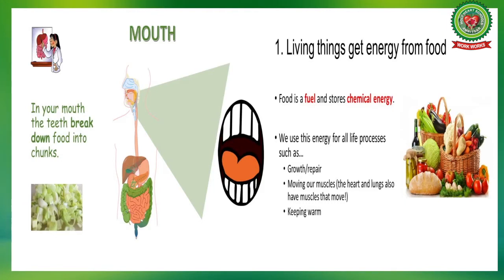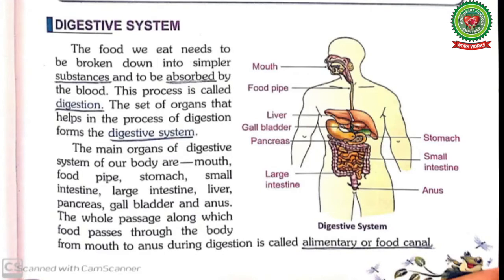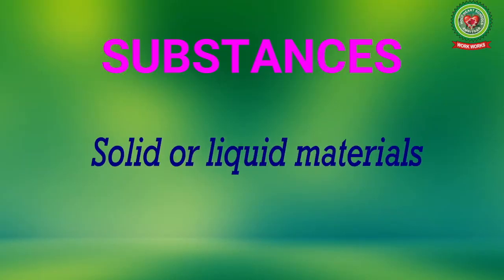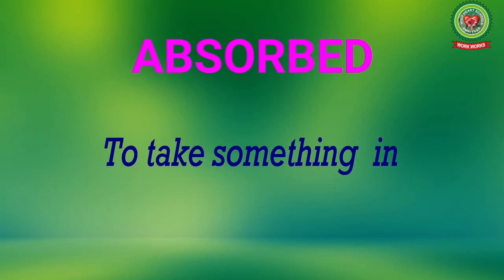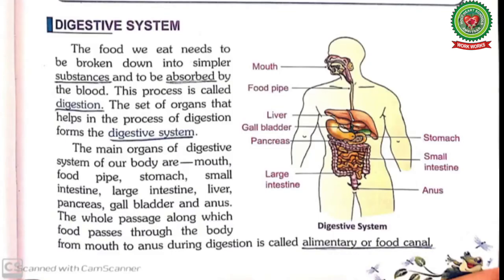Please open your book at page number 29 and let's start with the reading. Today our topic is the digestive system. The food we eat needs to be broken down into simpler substances and absorbed by the blood. I have marked two key words: 'substances,' which means solid or liquid material, and 'absorbed,' which means to take something in.